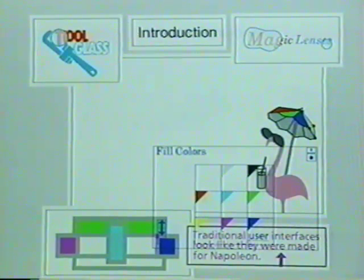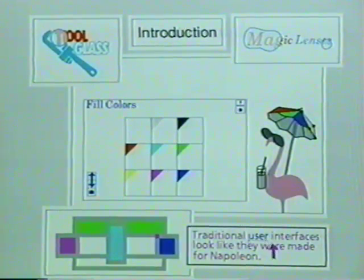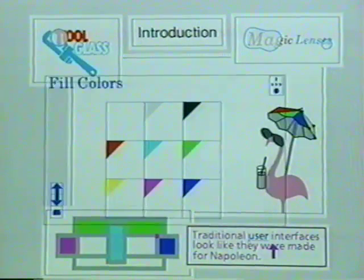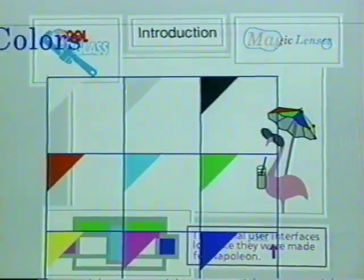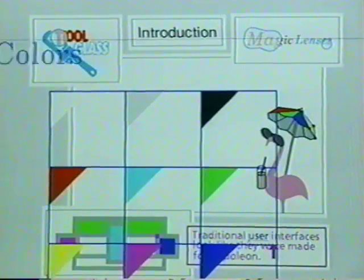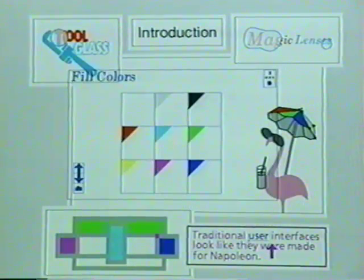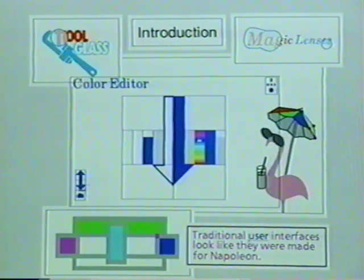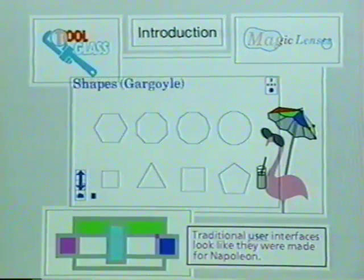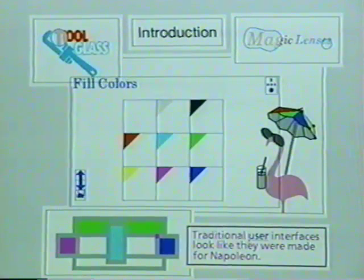Tool glass requires only coarse positioning with the non-dominant hand. To make use easier, sheets can be scaled up or down using the thumb wheel. A tool glass sheet can have many layers called tiles. We can navigate through the sheet by moving to the next tile, back to the previous tile, or use an overview tile to move directly to any tile.